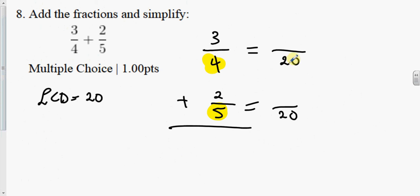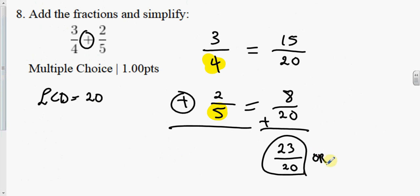So 4 goes into 20 5 times. That is 20 divided by 4 is 5. 5 times 3 is 15. 5 goes into 20 4 times. 4 times 2 is 8. So now we're going to add, because it told us to add. So 15 plus 8 is 23. That's all over the common denominator of 20. Or you can reduce that to 1 and 3 over 20.